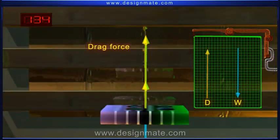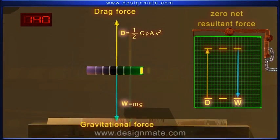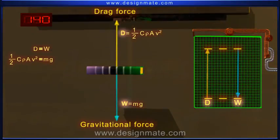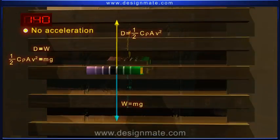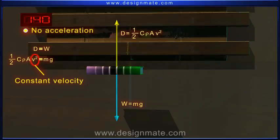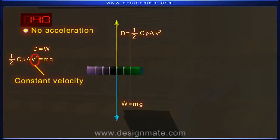Once the drag force equals the force due to gravity, the net resultant force acting on the object becomes zero, which means the object no longer accelerates. Rather, it will now fall with a constant velocity.